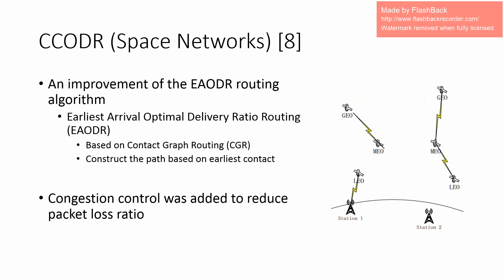One interesting application for DTN networks is space networks. Before discussing the CCODR algorithm, we need to discuss the EAODR routing algorithm it is based on. The EAODR algorithm generates a path between source and destination nodes based on the earliest contact. As it computes each possible path, it generates a lot of overhead and congestion problems. The authors of the CCODR work claim to solve these congestion problems to reduce the packet loss ratio.